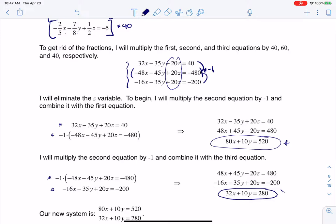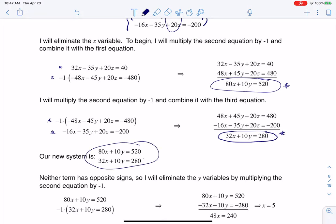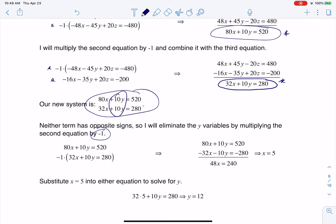So now I've got a new system. I've got a new 2 by 2. And this 2 by 2 is great because, again, I'm going to eliminate the Ys. They have the same number. They just need opposite signs. So no problem. Let's multiply the second equation by negative 1. When I do that, the Ys get eliminated. And I can solve for X. X is 5.